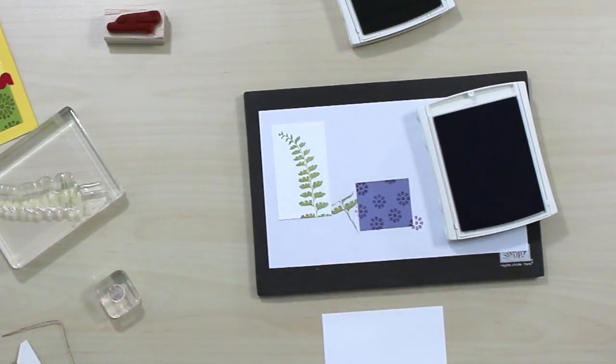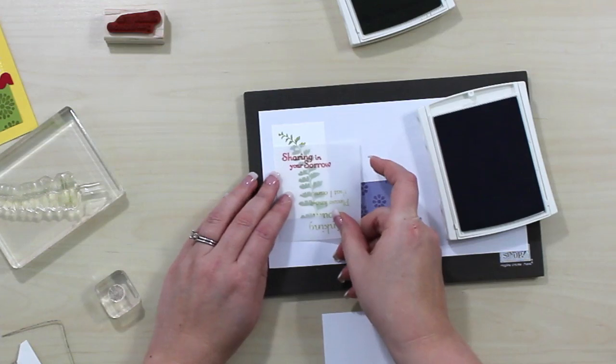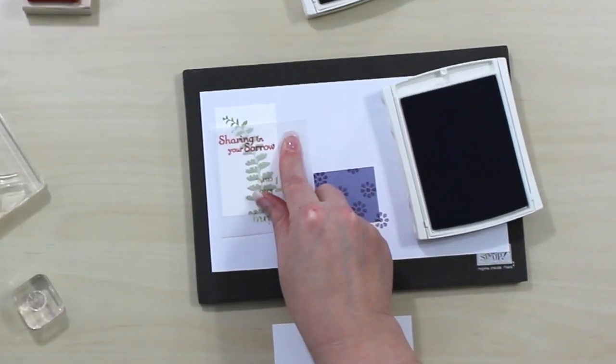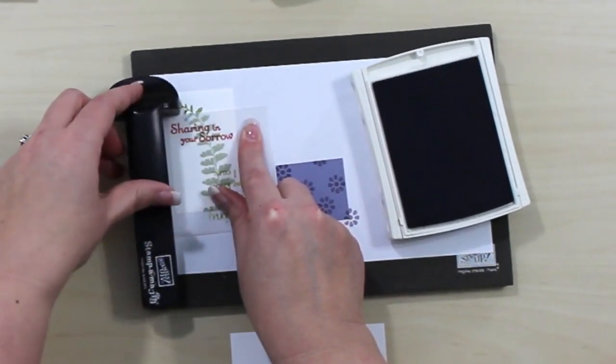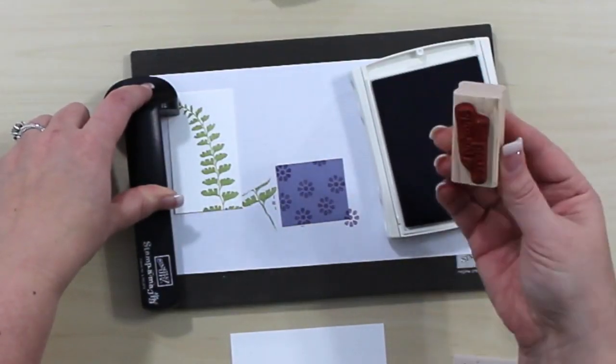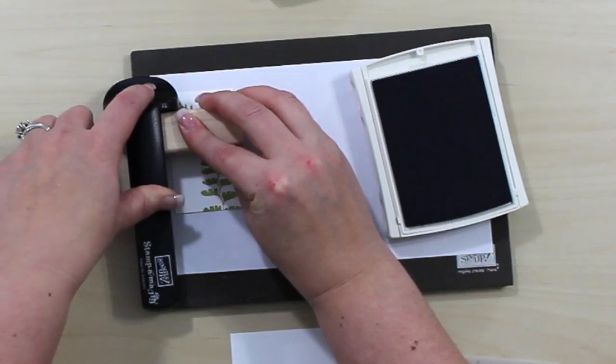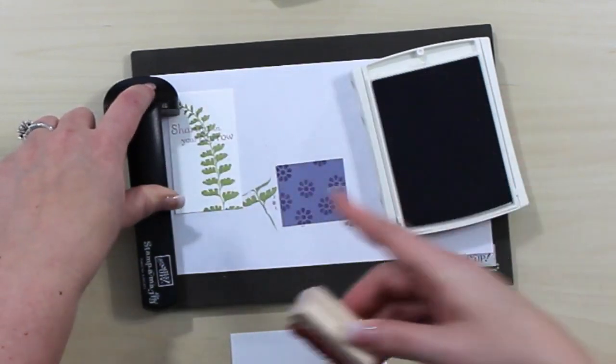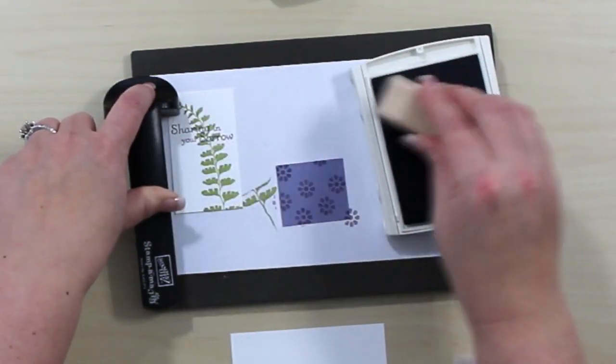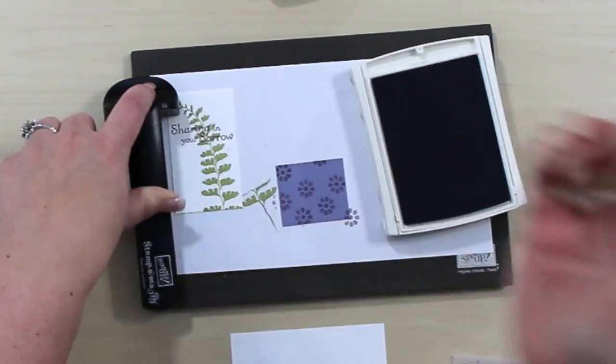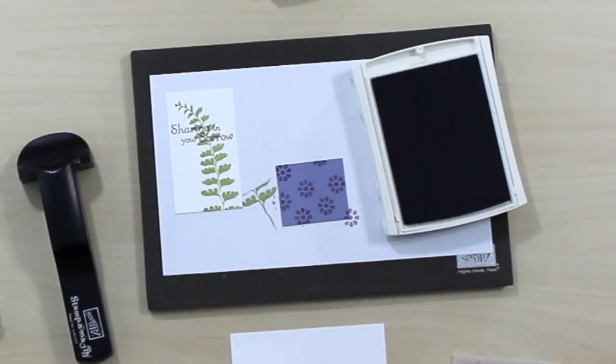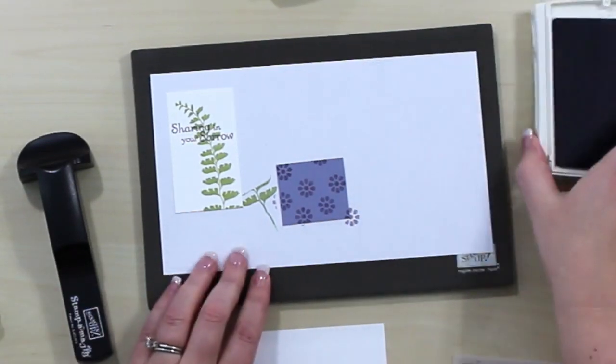Now let's go ahead and dress this up. I'm going to be using the Thoughts and Prayer stamp set and I want the Sharing in your Sorrow to go across the top there. I'm going to use my Stampin' Jig so I get perfect placement with it. I'm going to ink this up in Wisteria Wonder and I'm going to stamp it. And I'm not going to move my Stampin' Jig. See how light that is? I'm going to go back over it, ink it up, go back over it and see I'm hitting that exact spot every time. And now look at how dark that is. So I've taken it from just being regular Wisteria Wonder to a very rich Wisteria Wonder.